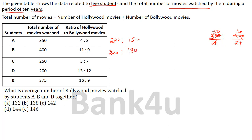For student C, total is 250 and the Bollywood to Hollywood ratio is 3 is to 7. So 3 plus 7 equals 10. 250 divided by 10 equals 25. Therefore Bollywood = 25 into 3 = 75, and Hollywood = 25 into 7 = 175. The split is 75 is to 175.